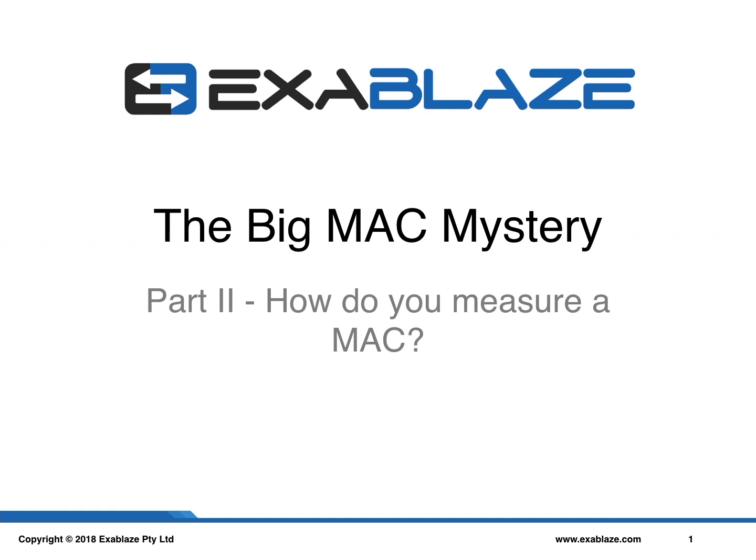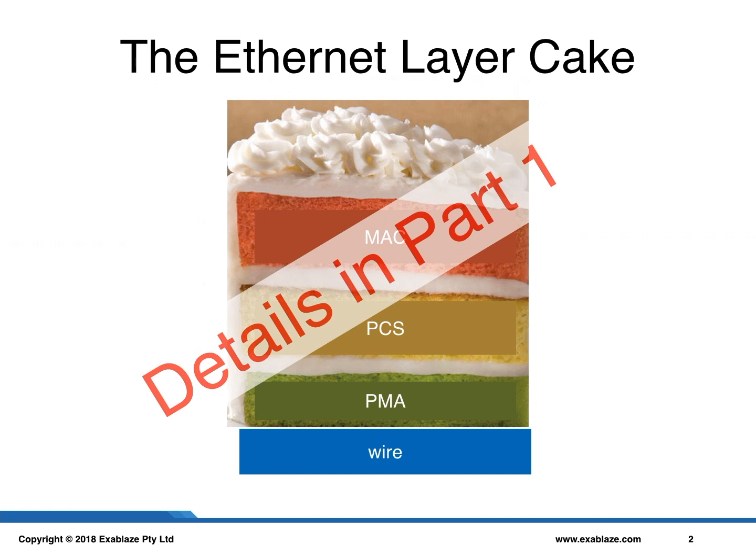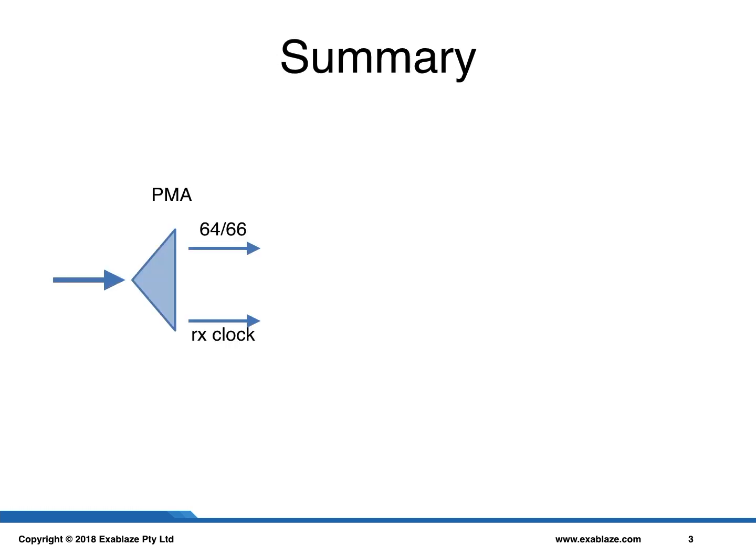Welcome to the second in our two-part series on the Big Mac Mystery. In this series, we are discussing the strange and interesting world of Ethernet MACs. In part one, we discussed the Ethernet MAC Layer Cake, where we looked at the various components of an Ethernet MAC and how they come together. For the rest of this presentation, we will be using the following summary diagram of an Ethernet MAC and its components.